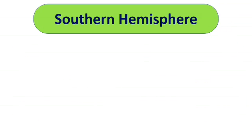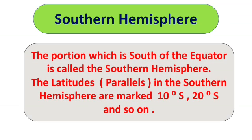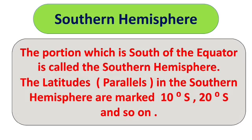Now what is the southern hemisphere? The portion which is south of the equator, or below the equator, is called the southern hemisphere. The latitudes, that is parallels, in the southern hemisphere are marked 10 degrees south, 20 degrees south, 30 degrees south, and so on.